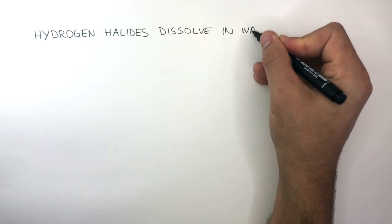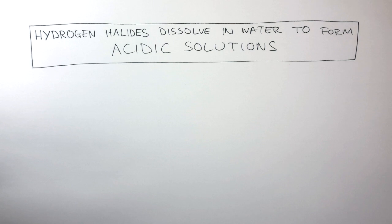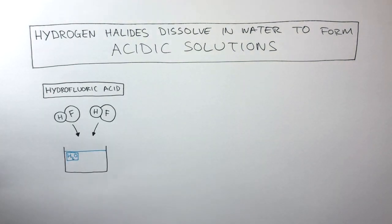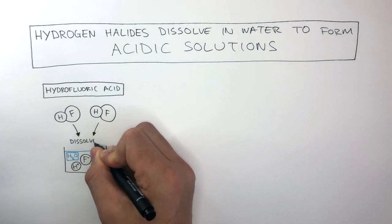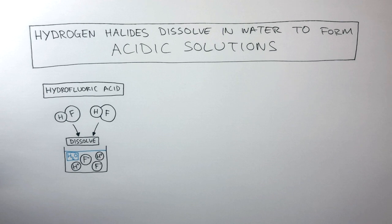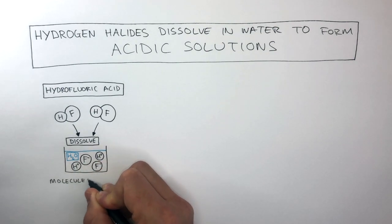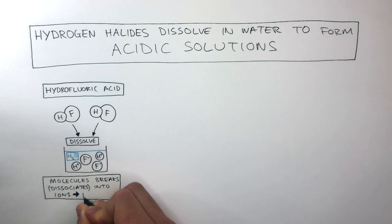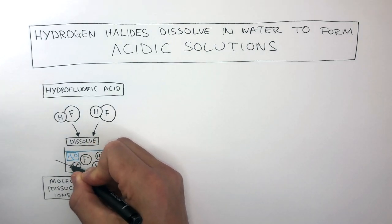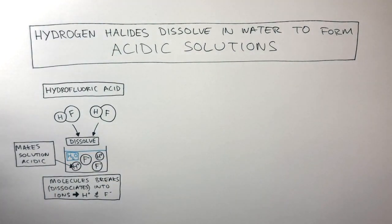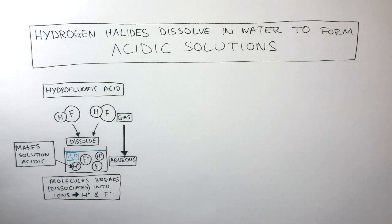Hydrogen halides dissolve in water to form acidic solutions, and you need to know the name of the first three acids in Group 7. Hydrofluoric acid forms when hydrogen fluoride dissolves in water — the molecules dissociate into their ions, H⁺ and F⁻. It is the H⁺ ions that make the solution acidic. The more H⁺ ions there are, the more acidic the solution is. We can summarize this as hydrogen fluoride gas becoming aqueous hydrofluoric acid.